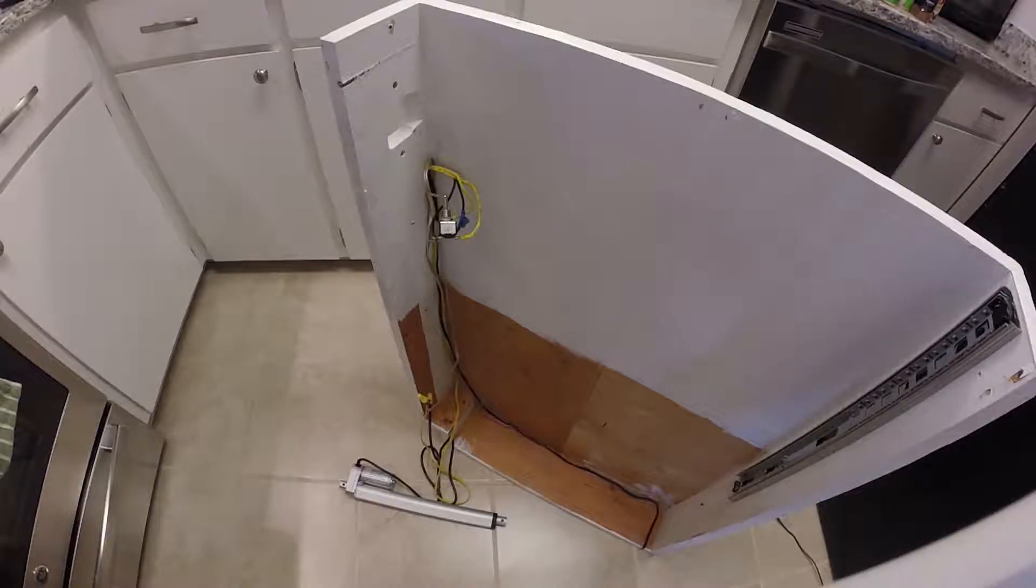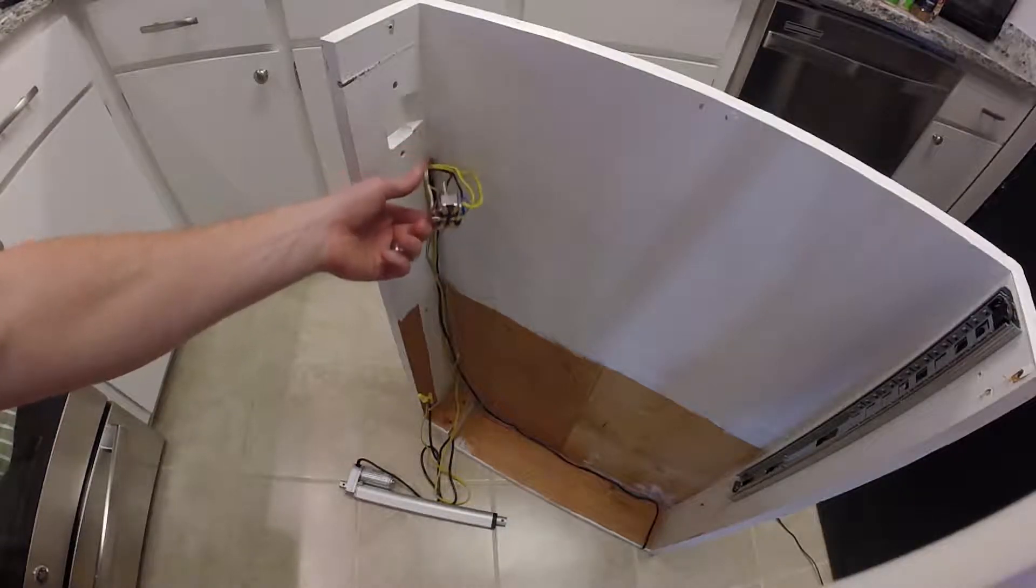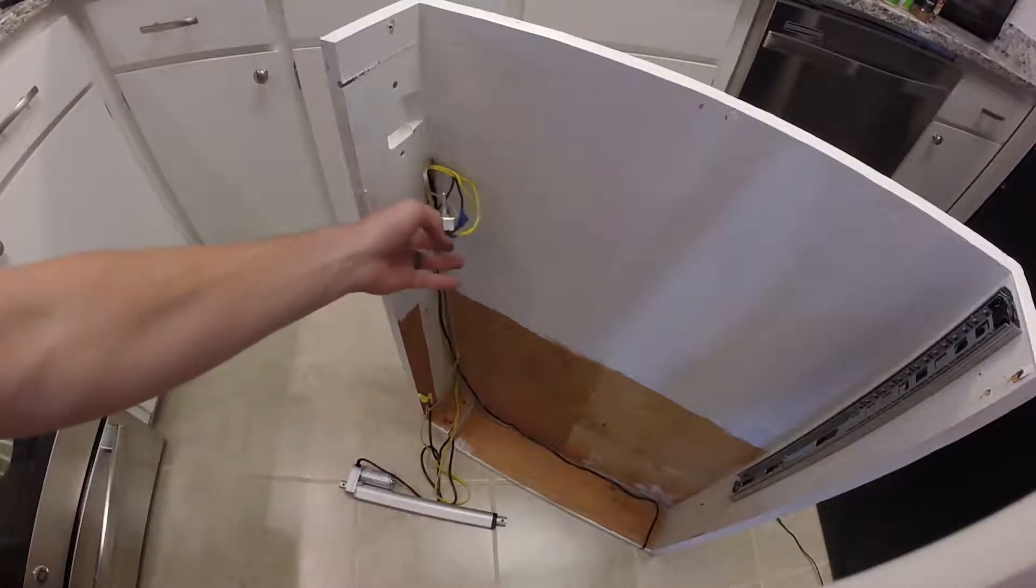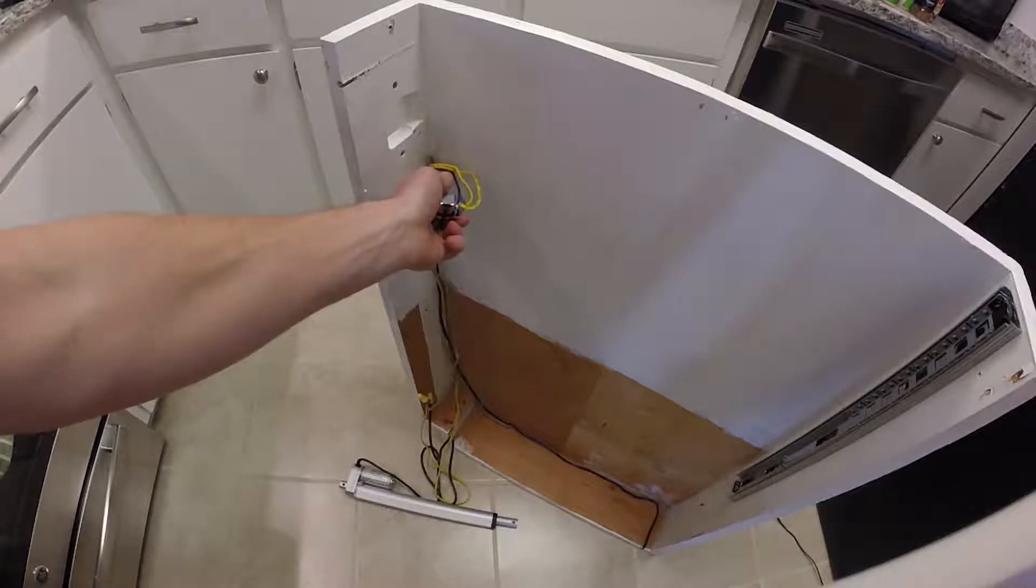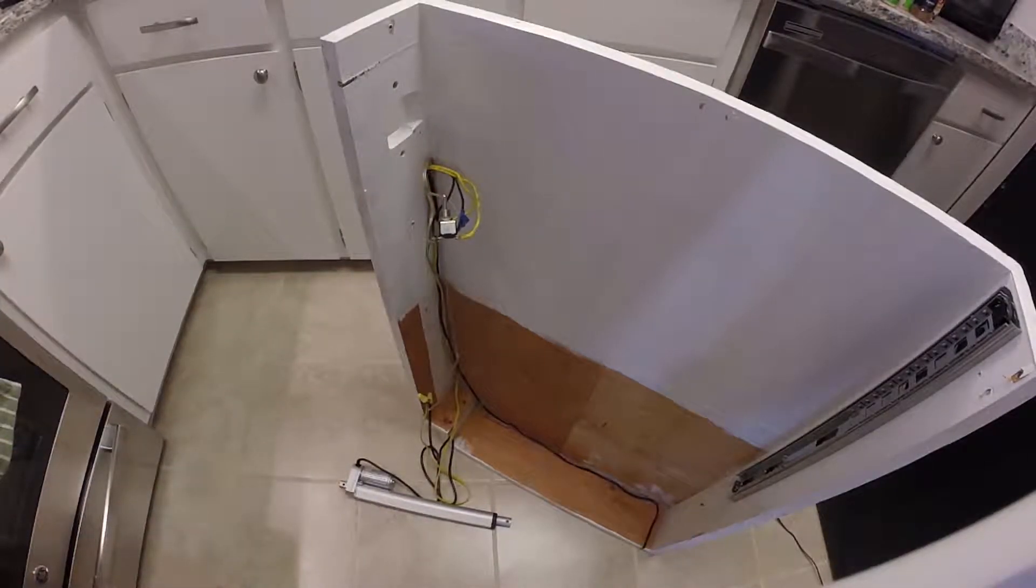All right so off-camera I went ahead and removed the old switch and soldered in the new switch and it was a pretty easy job. Just two wires coming into the actuator here and as you can see now we are good to go. Up and down works. Now all I got to do is figure out the linkage and again I'll do that off-camera and come back.